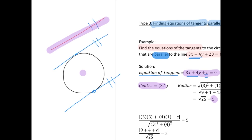So what we're going to use is that perpendicular distance rule again, because we want the perpendicular distance from our centre point to these lines to be equal to our radius r.